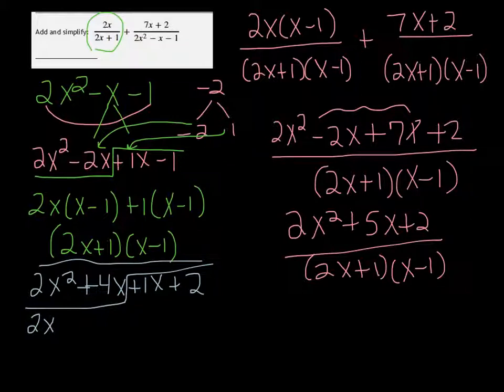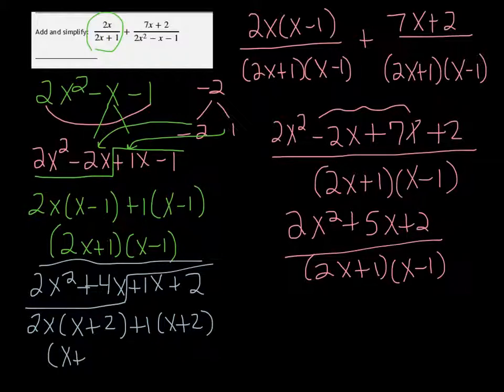Take the 2x out of the first two terms and you're left with x plus 2. And all we can do is take a 1 out of x plus 2. So plus 1 times x plus 2. So our factors are x plus 2 times 2x plus 1.